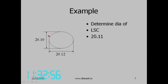The diameter in one direction is 20.12 and in the other direction is 20.1. What will be the least squares circle diameter? Because of symmetry it cannot move to any other side, so it has to be in between the two — midway — that will be 20.11. So 20.11 will be the least squares circle for this set of points.